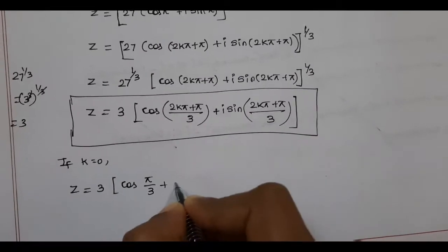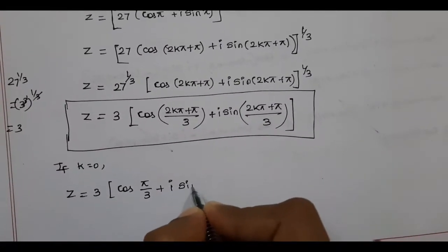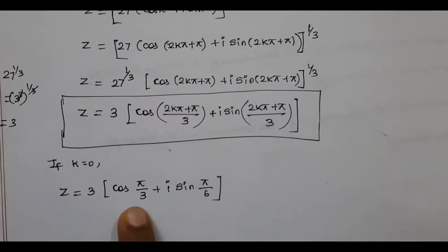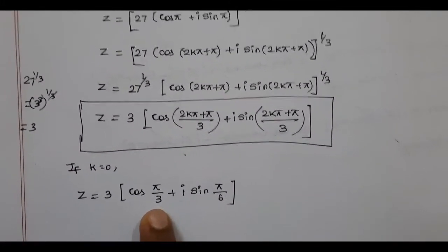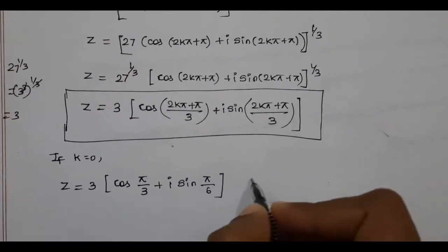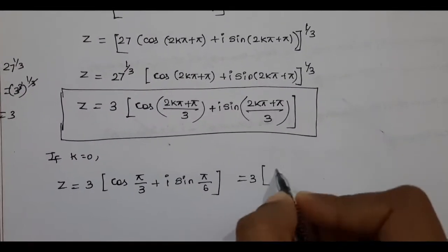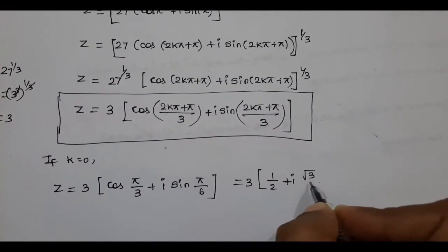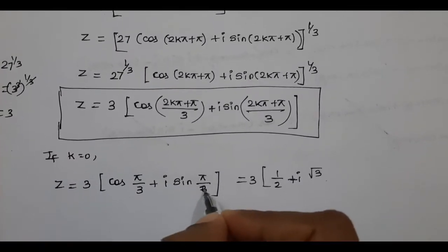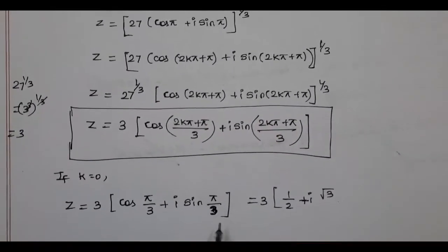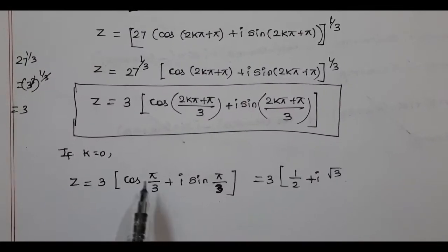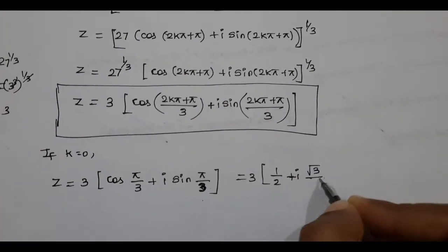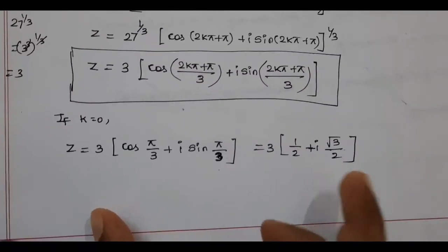For k = 0: z = 3 × [cos(π/3) + i sin(π/3)]. cos(π/3) is cos 60° = 1/2, and sin(π/3) is sin 60° = √3/2. So the first root is 3 × (1/2 + i√3/2).